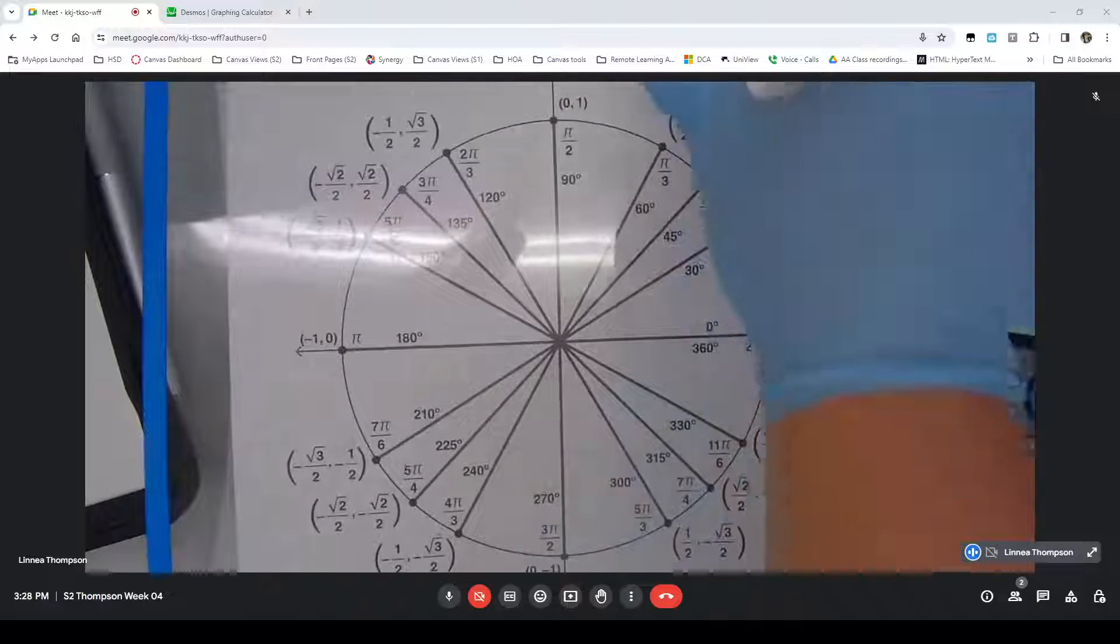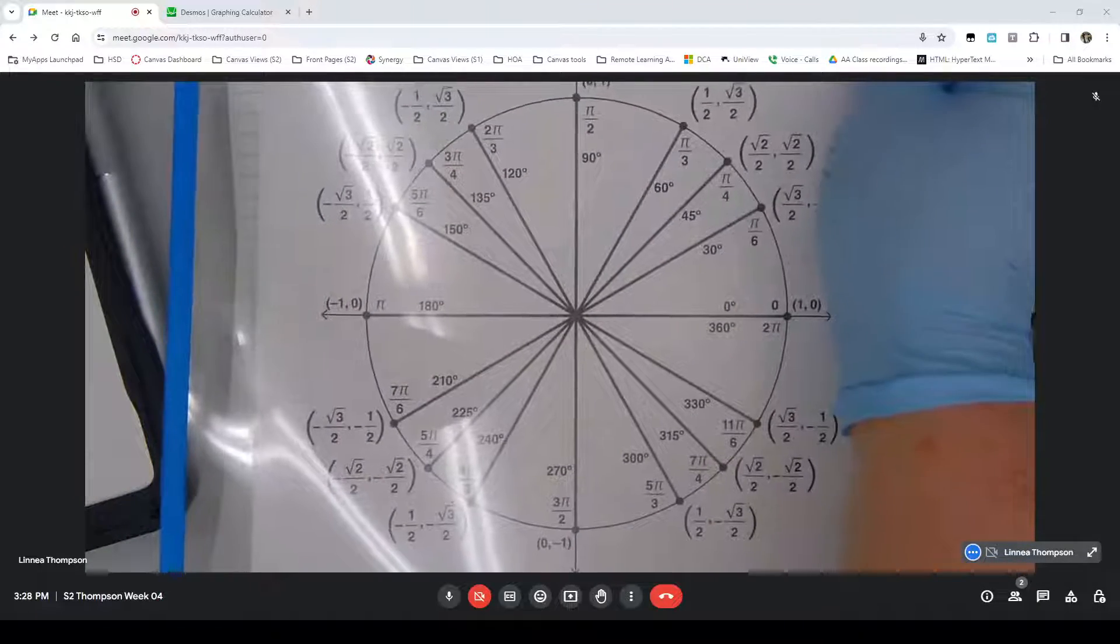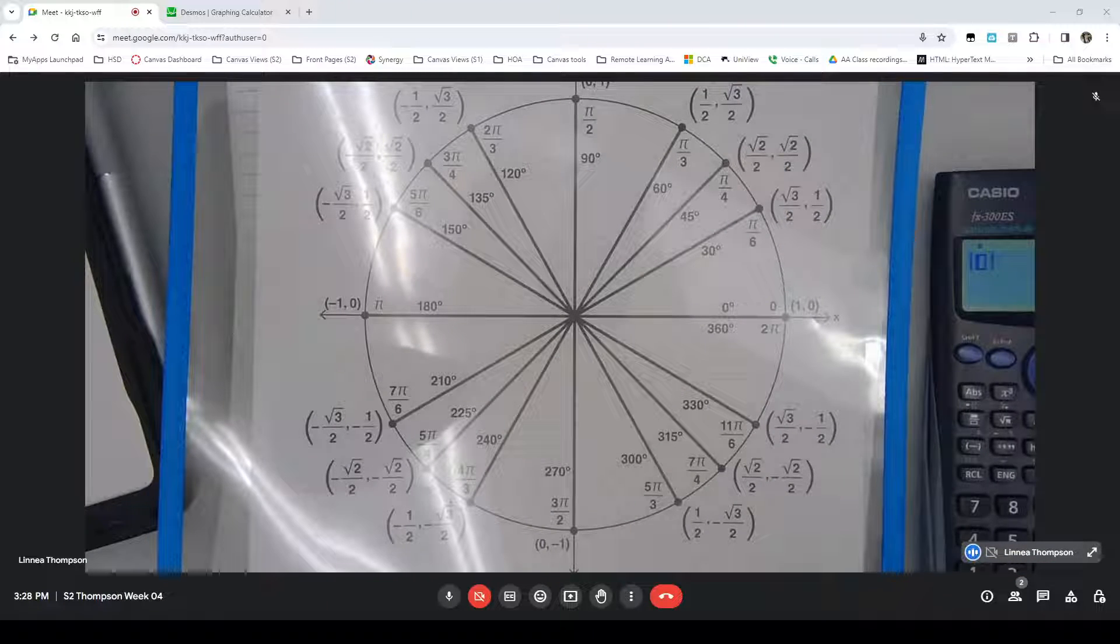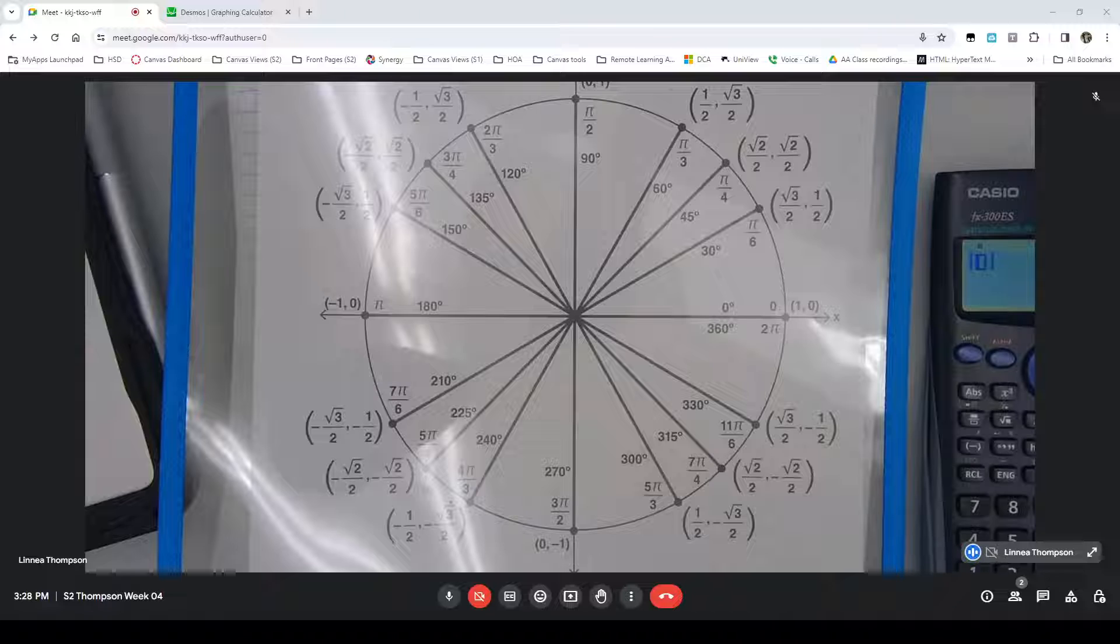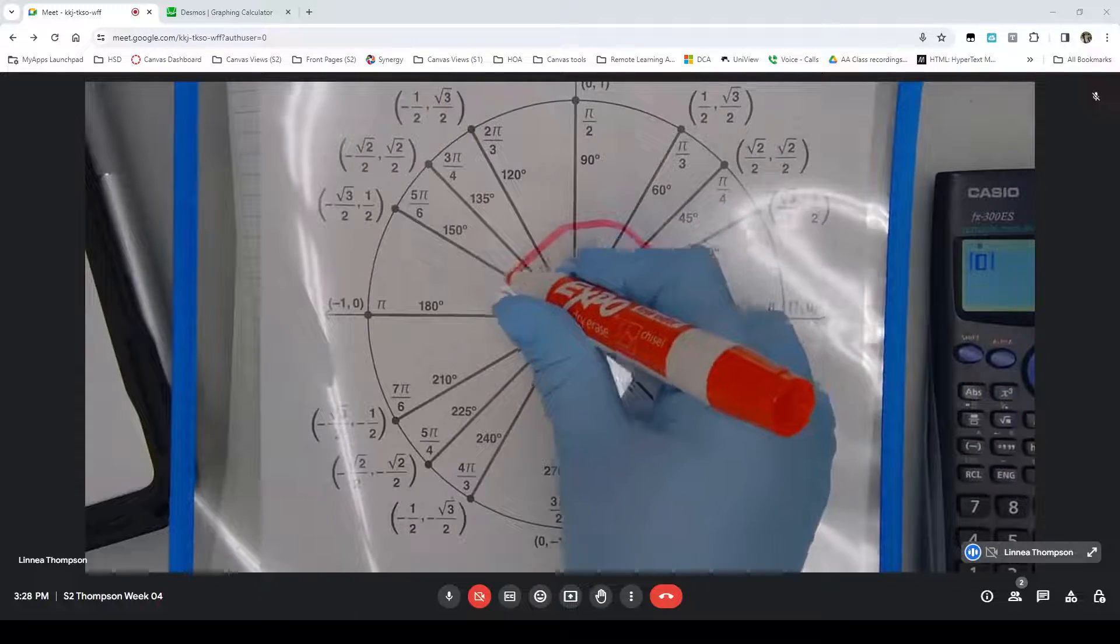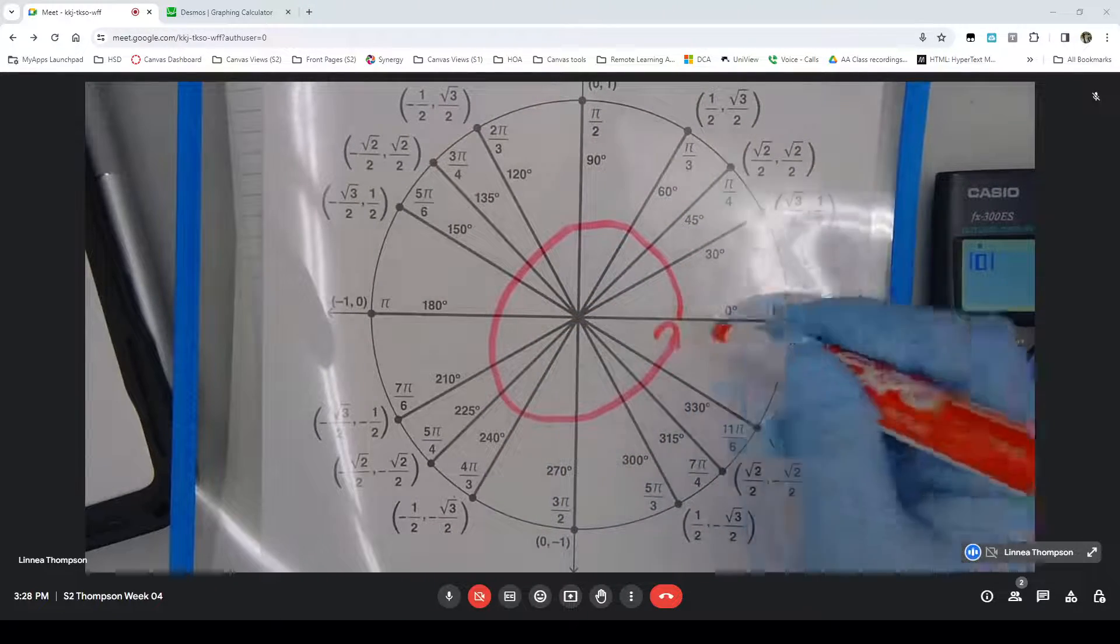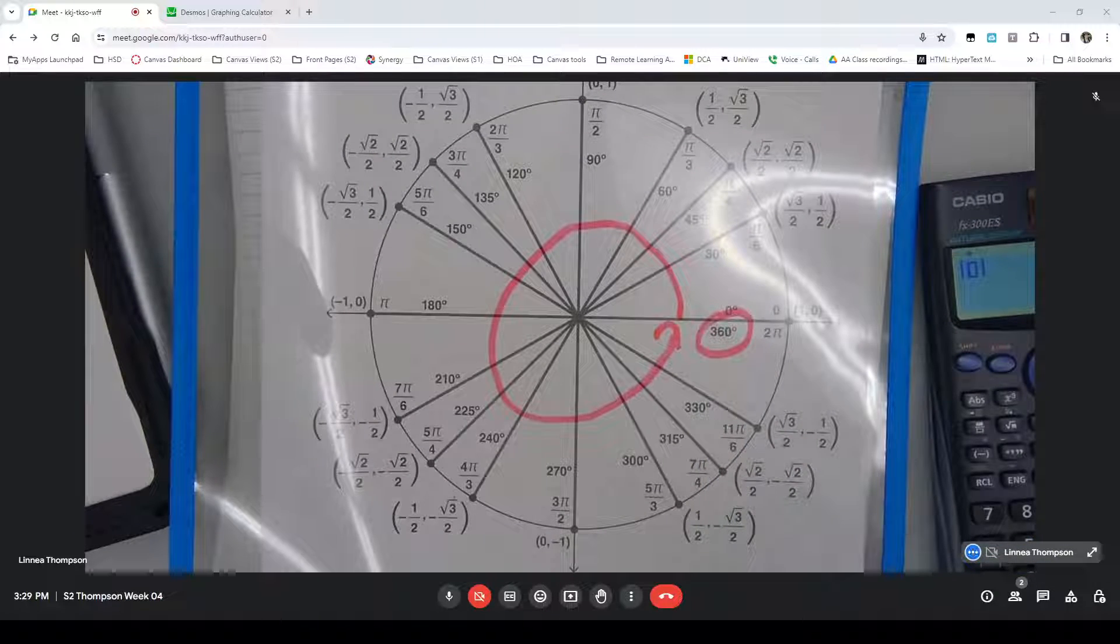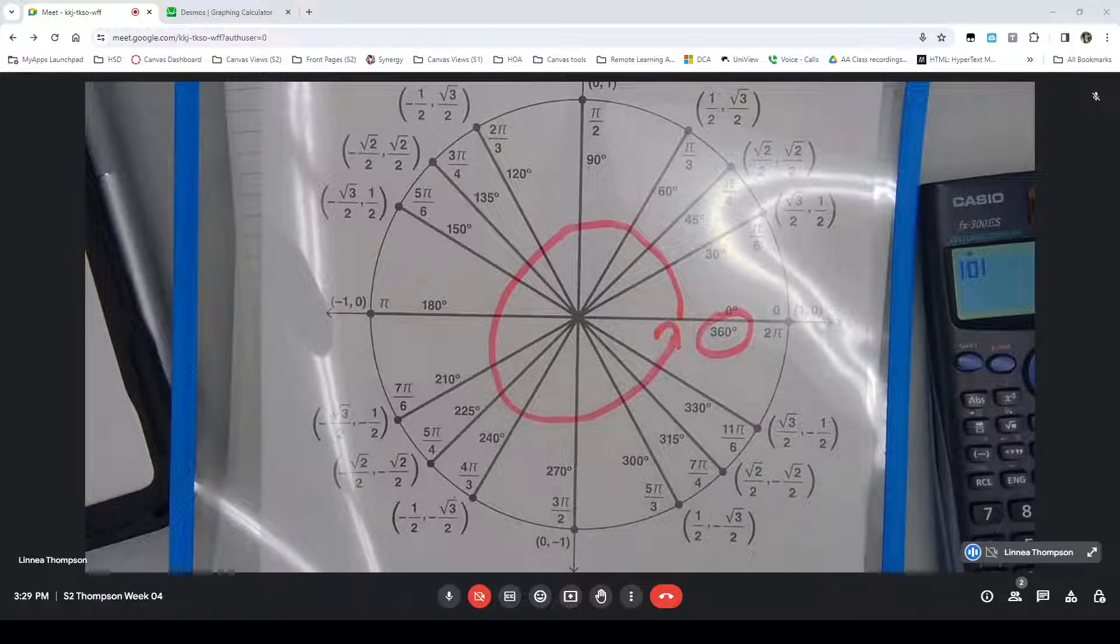This is what's called a unit circle. But right now the important thing about it is that we can talk about how many degrees it takes to go around a circle. If I start here and I spin all the way around the circle that's 360 degrees. So there are 360 degrees in a circle.